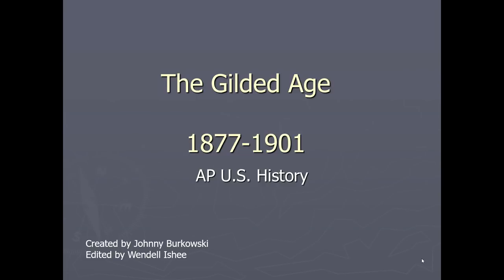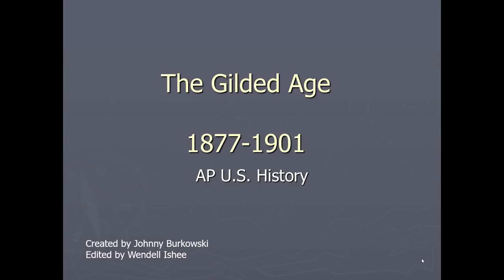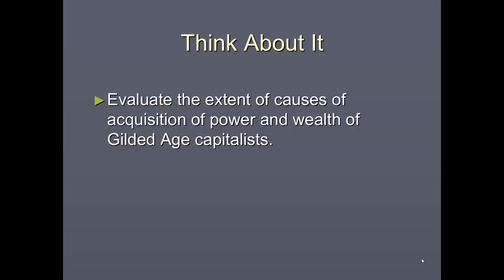This lesson is going to be about the Gilded Age. The Gilded Age covers anywhere from the years 1877 to around 1901. You can extend it into 1910 if you want to include the Progressive Era and populism. This goes with your reading for chapters 17 and even parts of 18.